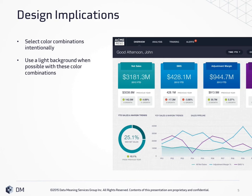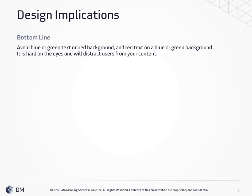Saturation being the perceived intensity or vividness of a color. In this example, we use red to highlight alerts and negative trending, but we didn't put the red icons directly on the green and blue boxes — we put them on a neutral background. The bottom line: avoid blue and green text on a red background, and red text on a blue or green background, as it's hard on the eyes and distracts users from your content, whether in an application or a presentation.